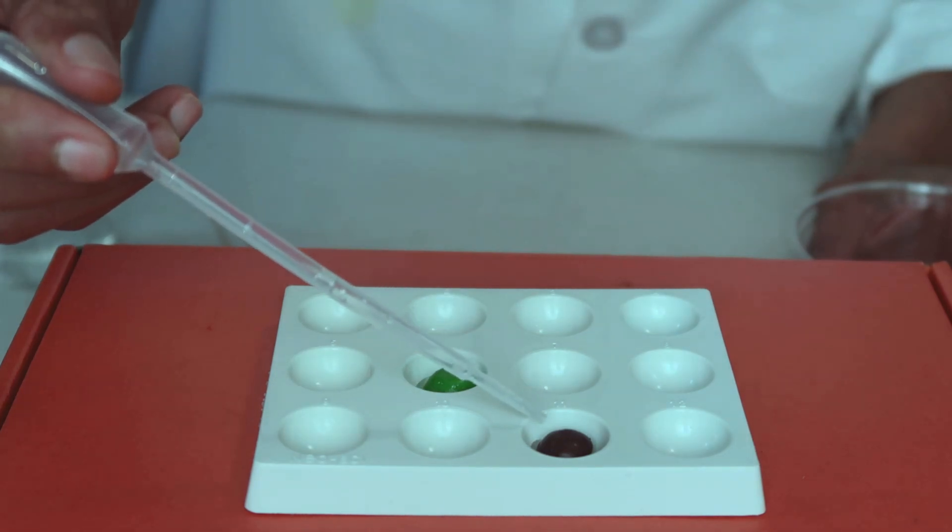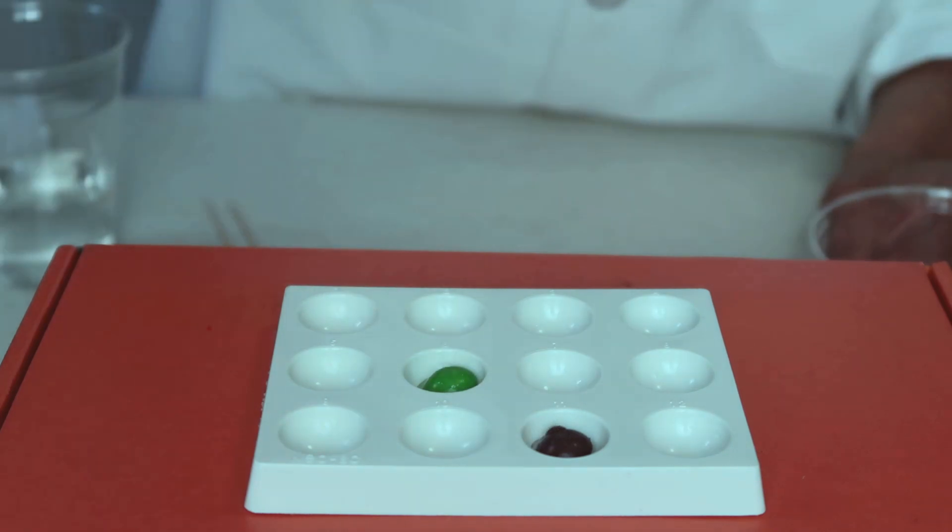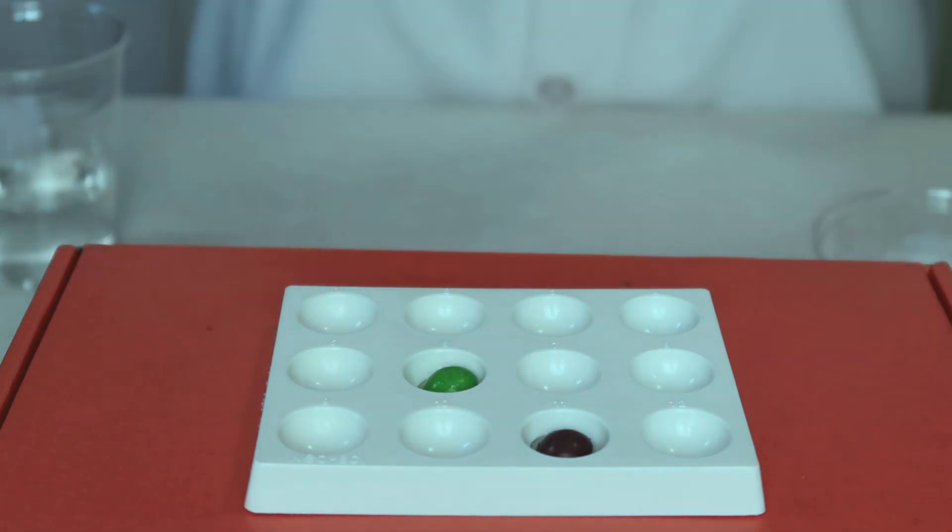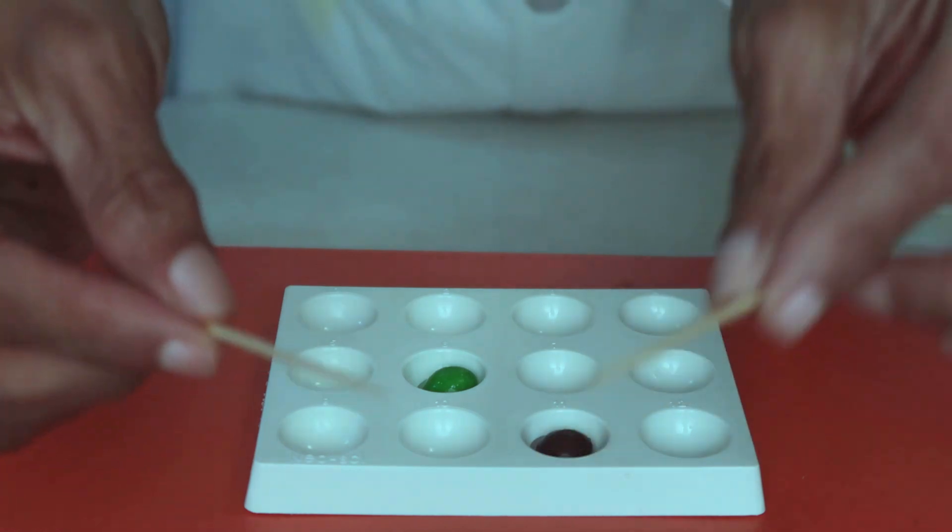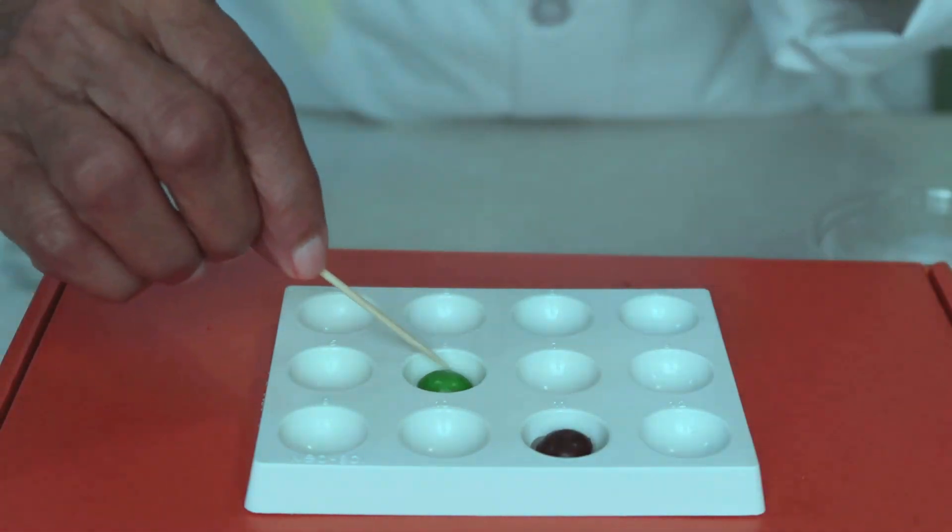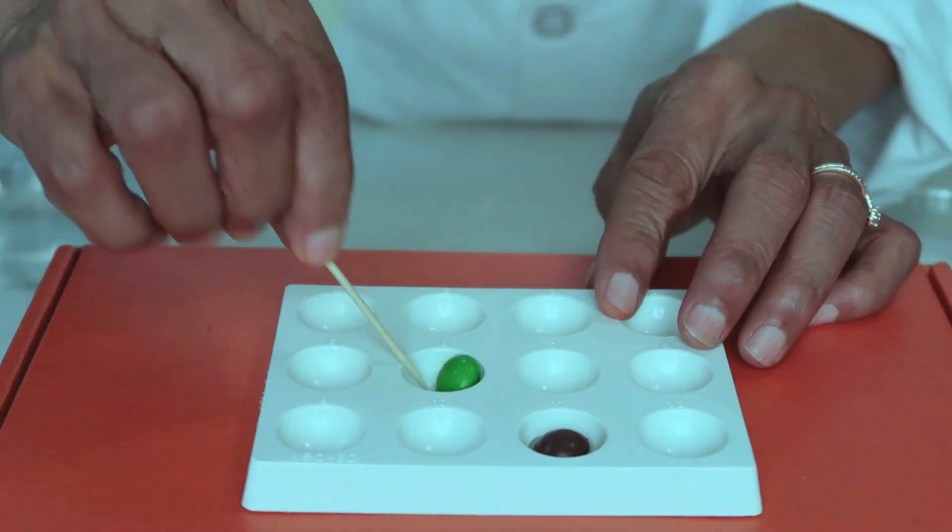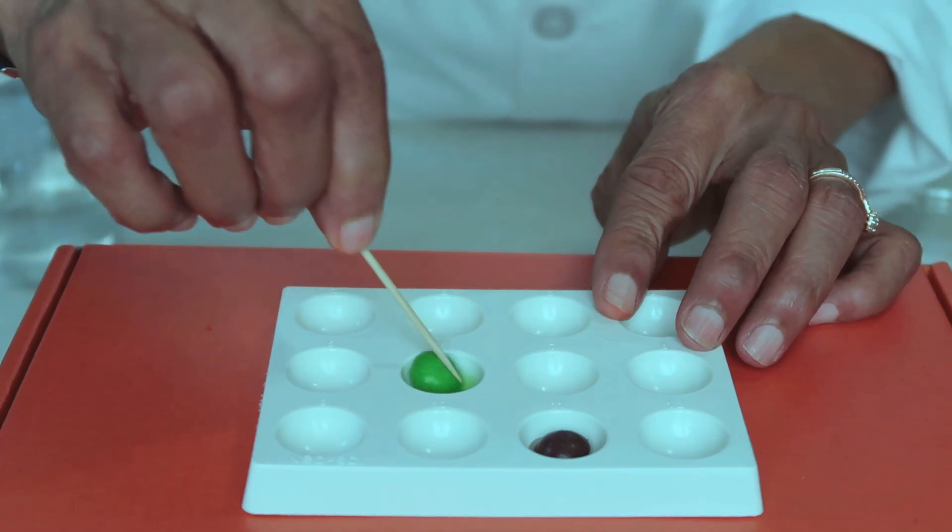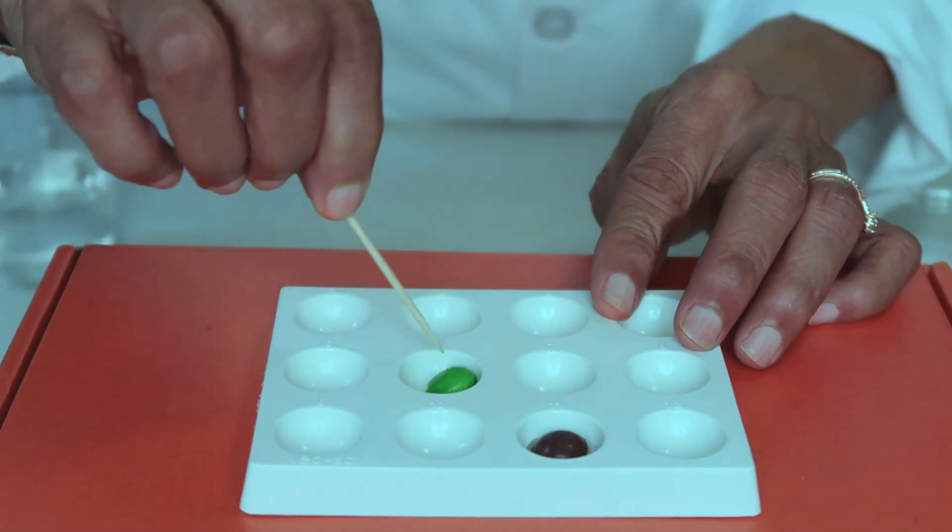Not much. We want the color. All right, then we're going to take two toothpicks, one for each color, and just stir that around. Get as much color off of that Skittle that you can.